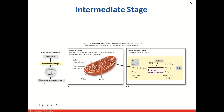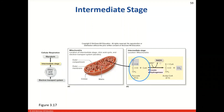Let's look at the intermediate stage. We are now located in the mitochondria. Our pyruvate molecule is combined with CoA to give us acetyl-CoA, and we are also able to create NADH in this process. Taking the same approach as with glycolysis — what do we start with, what do we end with — we start with pyruvate and coenzyme A, and we get acetyl-CoA and NADH.